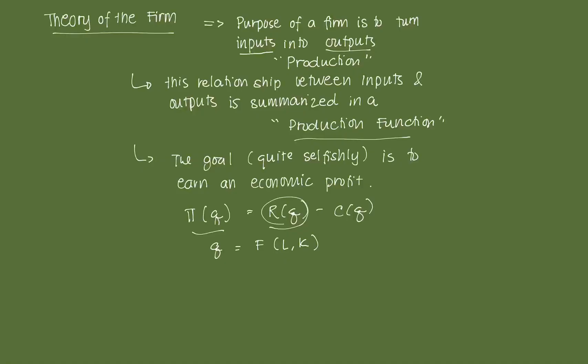Profit is revenue — a function of Q, the level of output — less cost. Revenue is whatever the firm gains from selling its output, less the cost it uses to produce that output. Q is the output a firm produces, which is a function of inputs, namely labor (L) and capital (K).